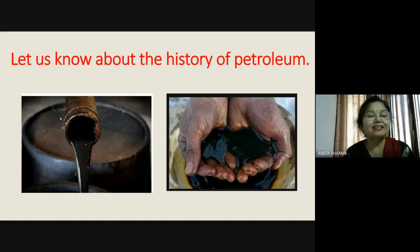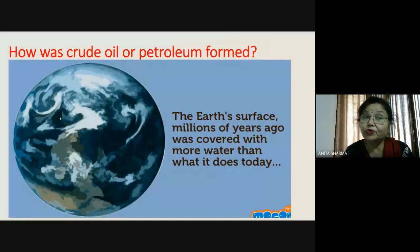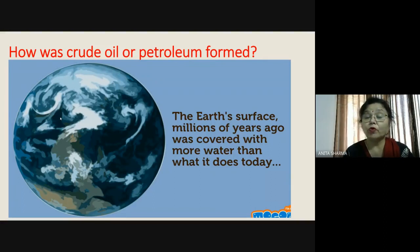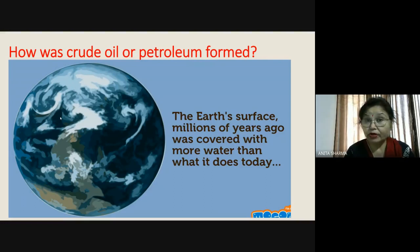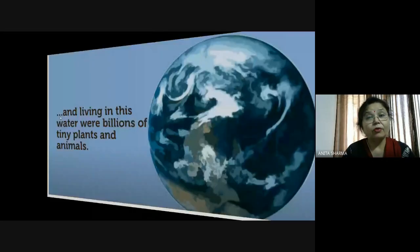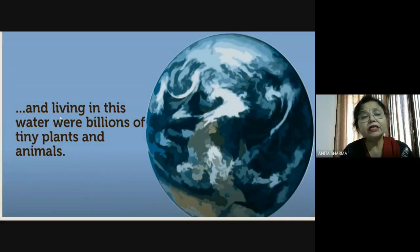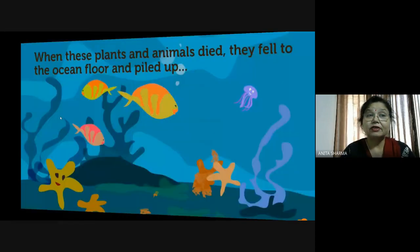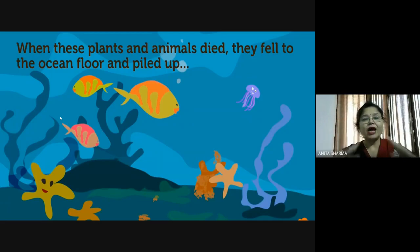The color of petroleum changes based on its constituents. Now the next slide shows us how crude oil or petroleum was formed. The earth's surface, millions of years ago, was covered with more water than today. A lot of water was there, and living in this water were billions of tiny plants and animals.